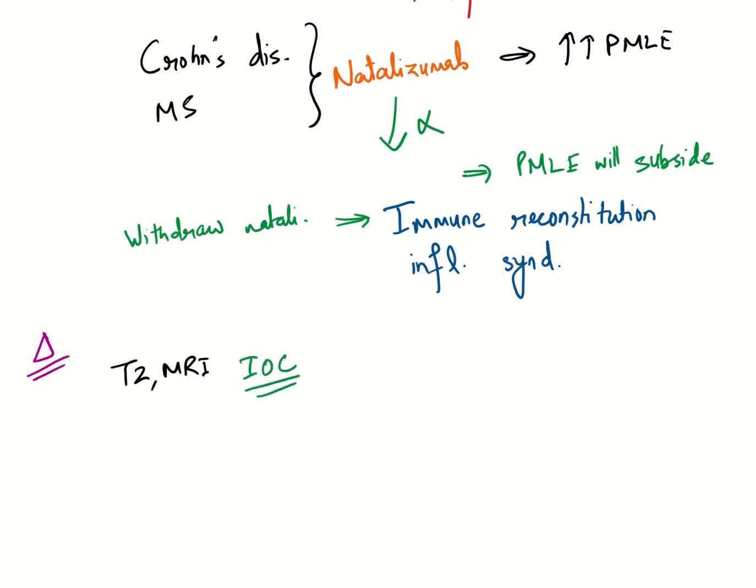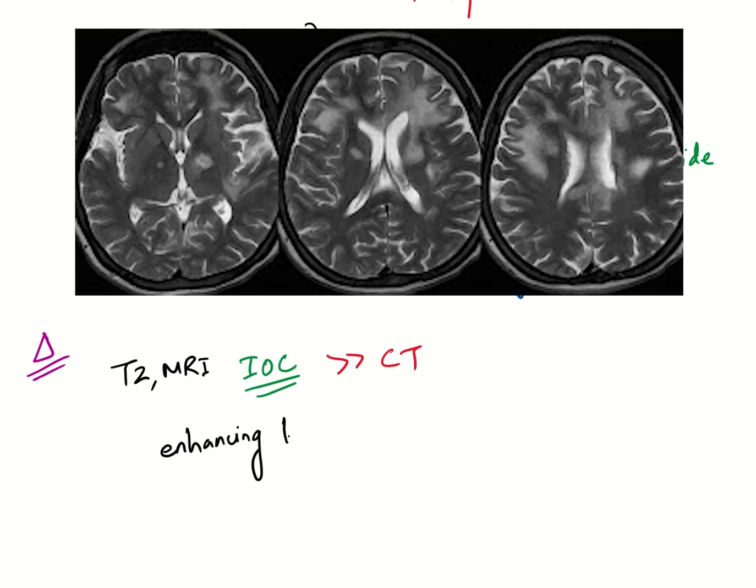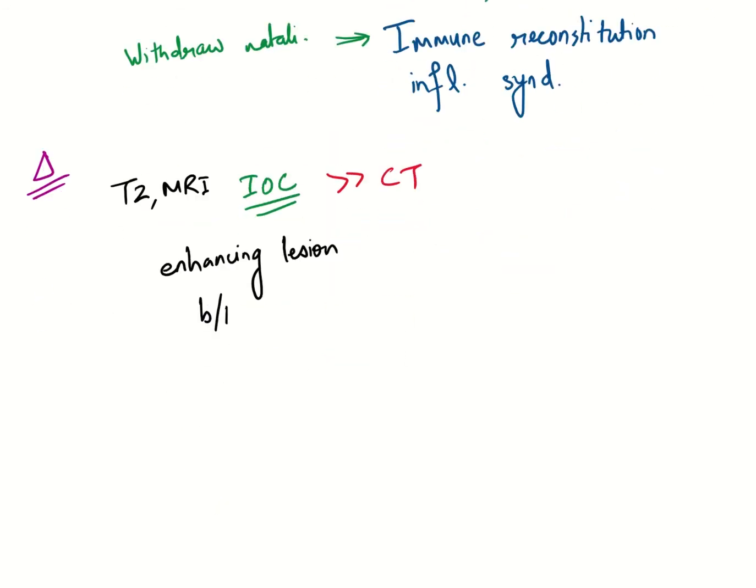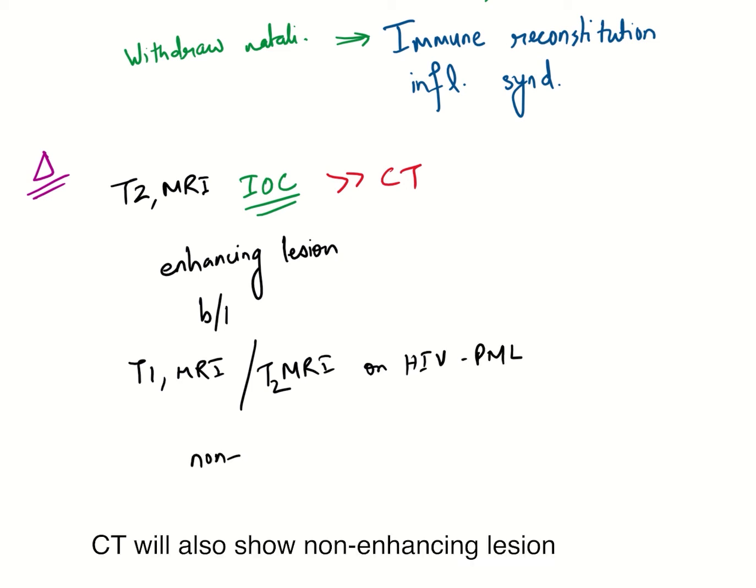It is more specific than CT, and here also you will see enhancing lesions like in this image, and they will be bilateral in nature. Do remember that if you take a T1 MRI or if you do a T2 MRI on an HIV patient who has PML, you will not see any enhancement and it will be a non-enhancing lesion.